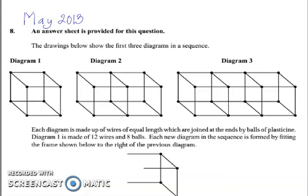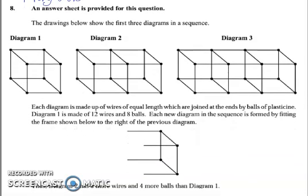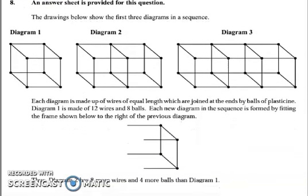May 2013, question number 8. An answer sheet is provided for this question. The diagram below shows the first three diagrams in a sequence. Each diagram is made up of wires of equal length, which are joined at the end by balls of plasticine. Diagram 1 is made of 12 wires and 8 balls.